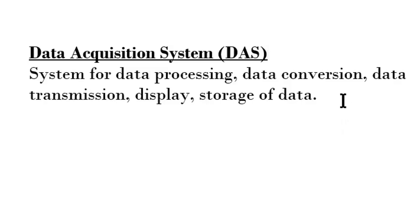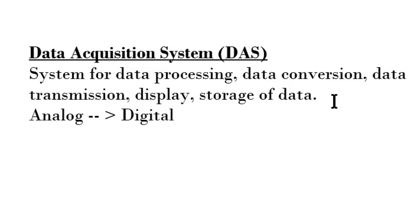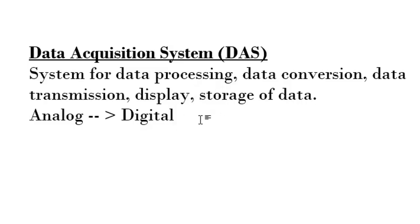Normally the data might be analog data. For processing, conversion, transmission, or display, this analog data should always be converted to digital form, because nowadays the maximum devices are digital. For example, if we want to store data into a computer hard disk, the analog data must be converted to digital form. All analog data coming from the field should be converted to digital. The data transmitted might be raw data or processed data. Now, what are the different components of the data acquisition system?